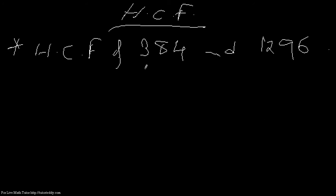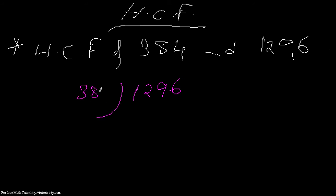Here I divide the greater number by the less at first. The greater number is 1296, and I divide it by the smaller number, that is 384.